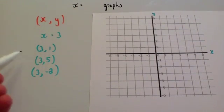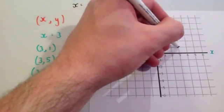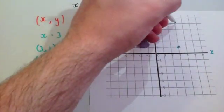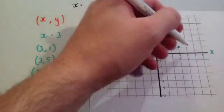So let's plot these coordinates. 3, 1: 3 across, 1 up. 3 across, 5 up. 3 across, 2 down.